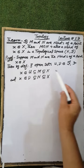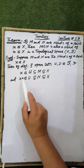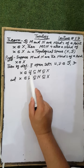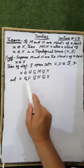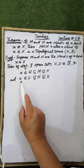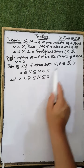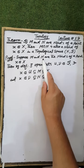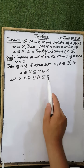By definition, there exist open sets U and V such that X is contained in the open set U, the open set U is contained in M, which is a subset of the ground set X, and the element X is contained in the open set V, which is a subset of N, which is a subset of the ground set X.